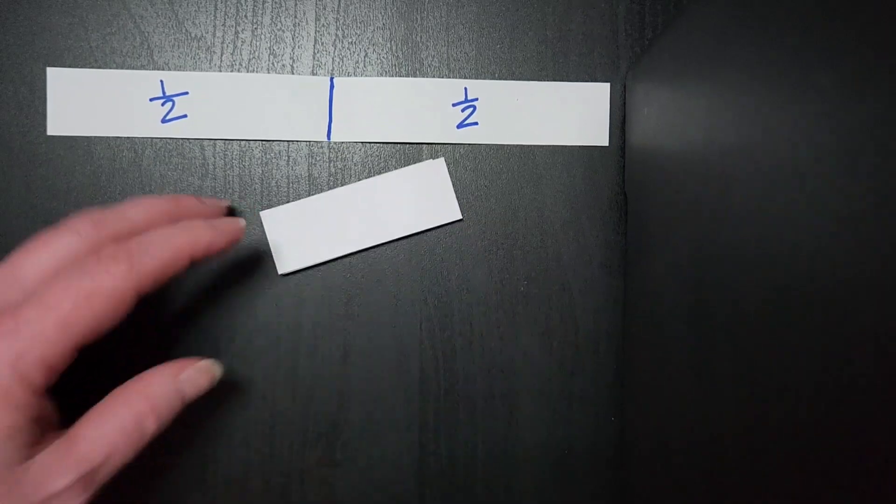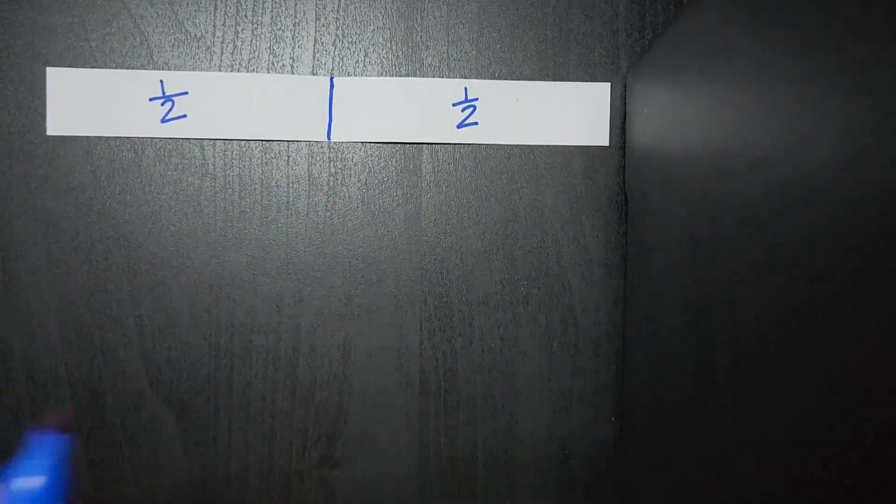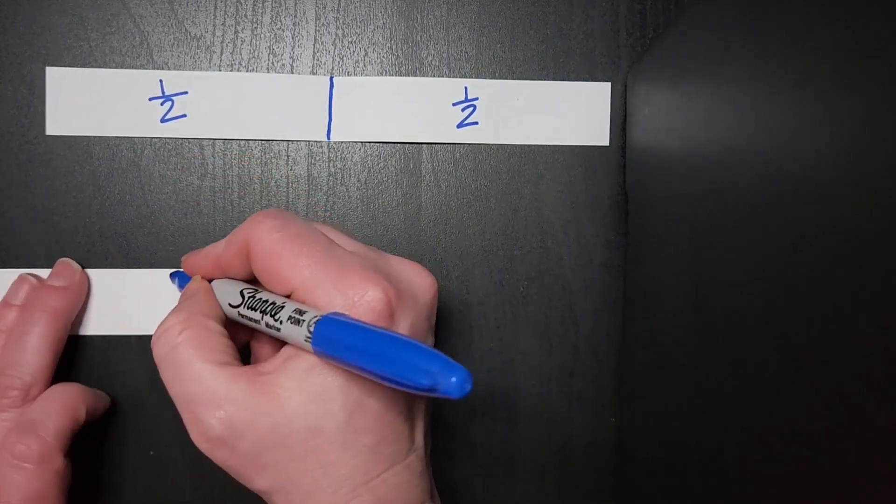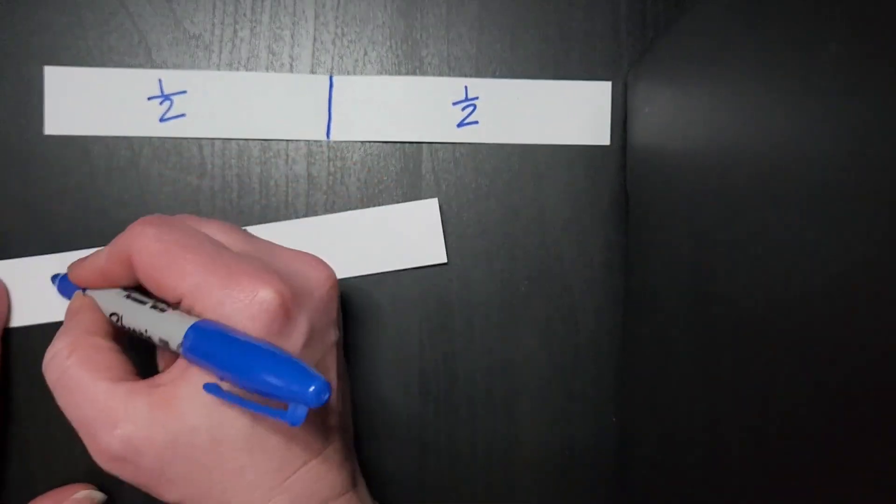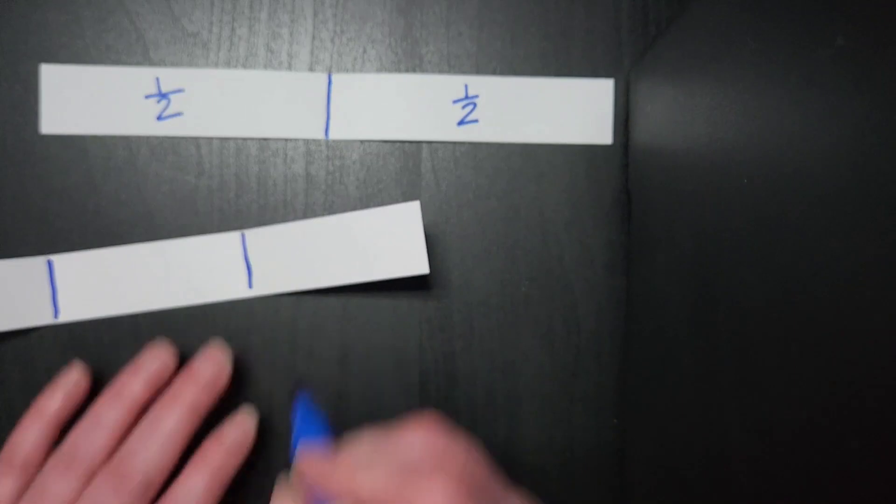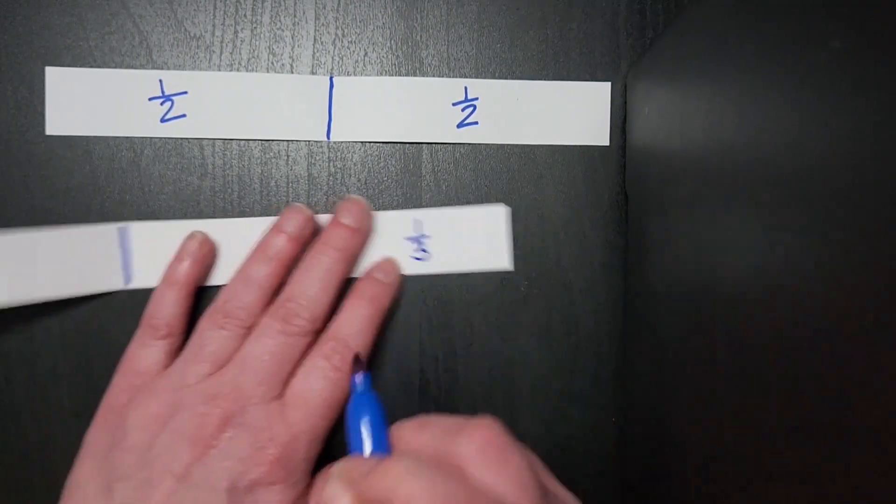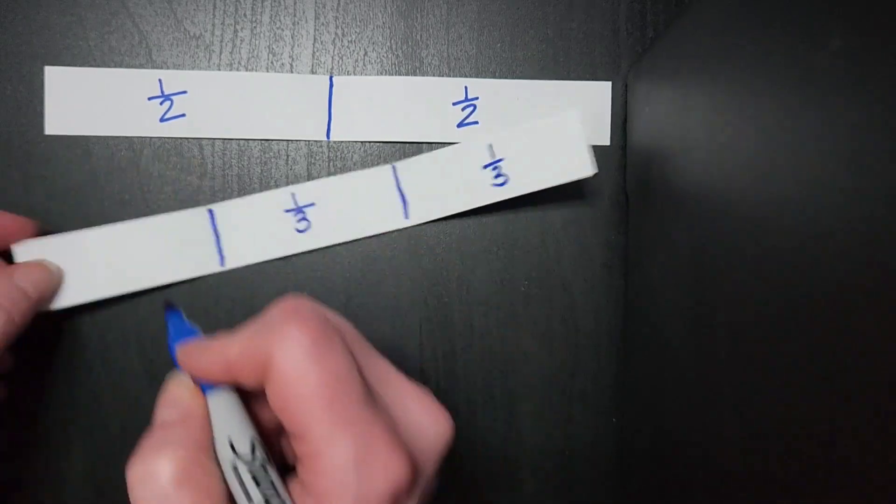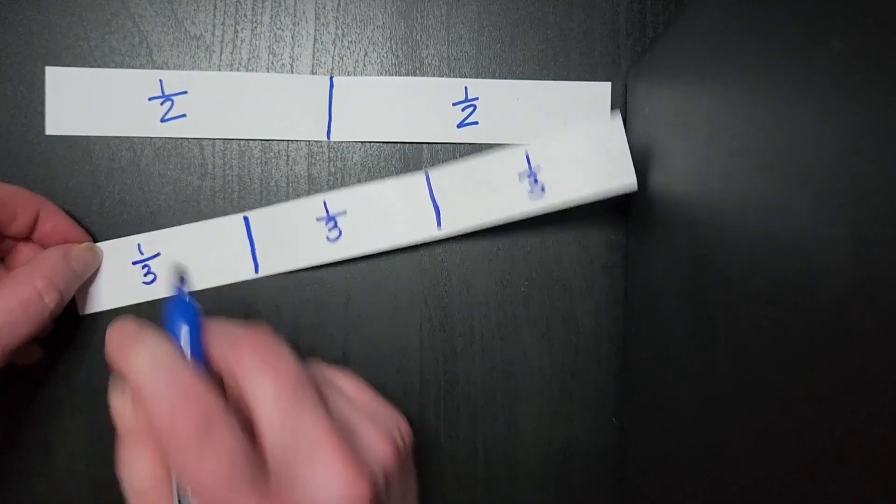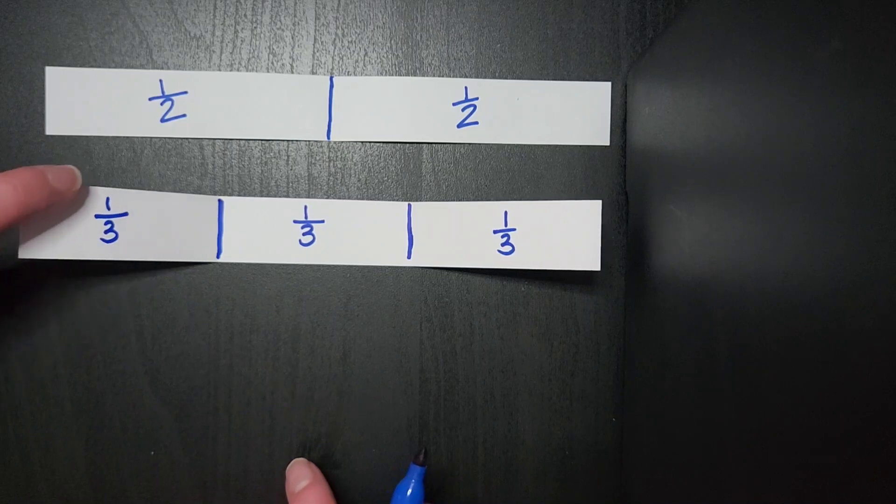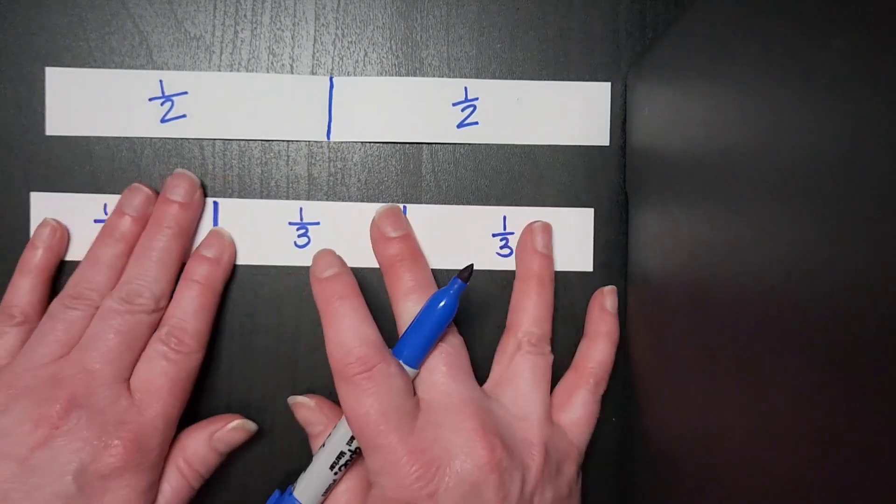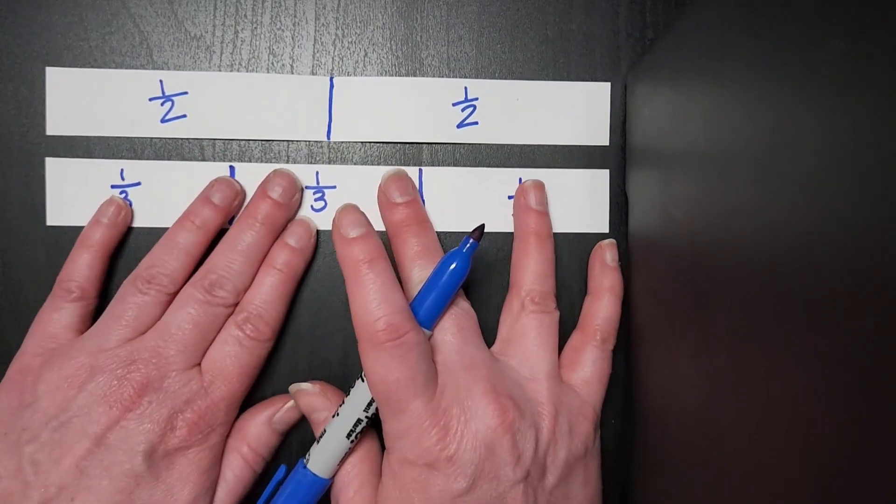So once it's folded, I tell students they can use their Sharpie to show those partitions. And then we talk about the fraction that represents each part. So I ask, what is the unit fraction of each part of the whole? And typically, somebody is able to tell me one third already. So we talk about, again, how the numerator, and I use that vocabulary, numerator is one, denominator is three, since there's three parts in the whole.